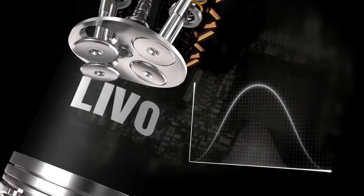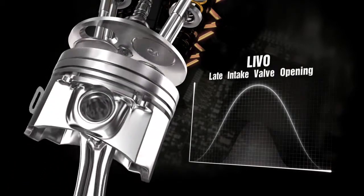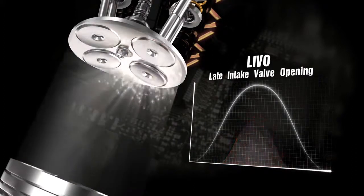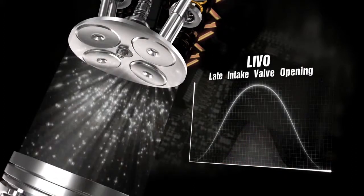At engine start up and idling, LIVO, late intake valve opening, determines a higher speed air intake, thereby optimizing the mixture formed and its combustion.